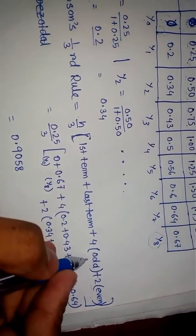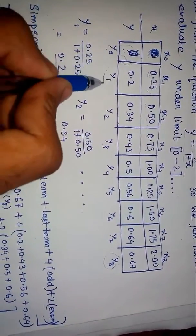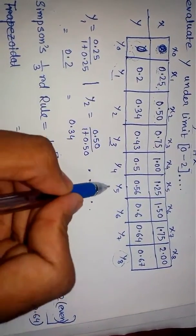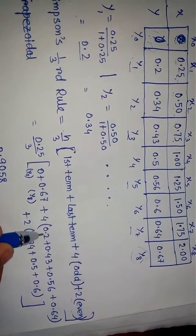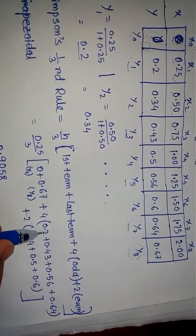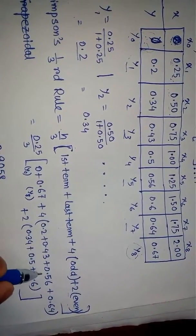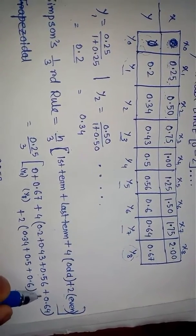So first term plus last term plus 4 into odd terms. Now what are the odd terms? Odd terms are y₁, y₃, y₅, and y₇. So I write down: 0.2, y₃ is 0.43, y₅ is 0.56, and y₇ is 0.64.